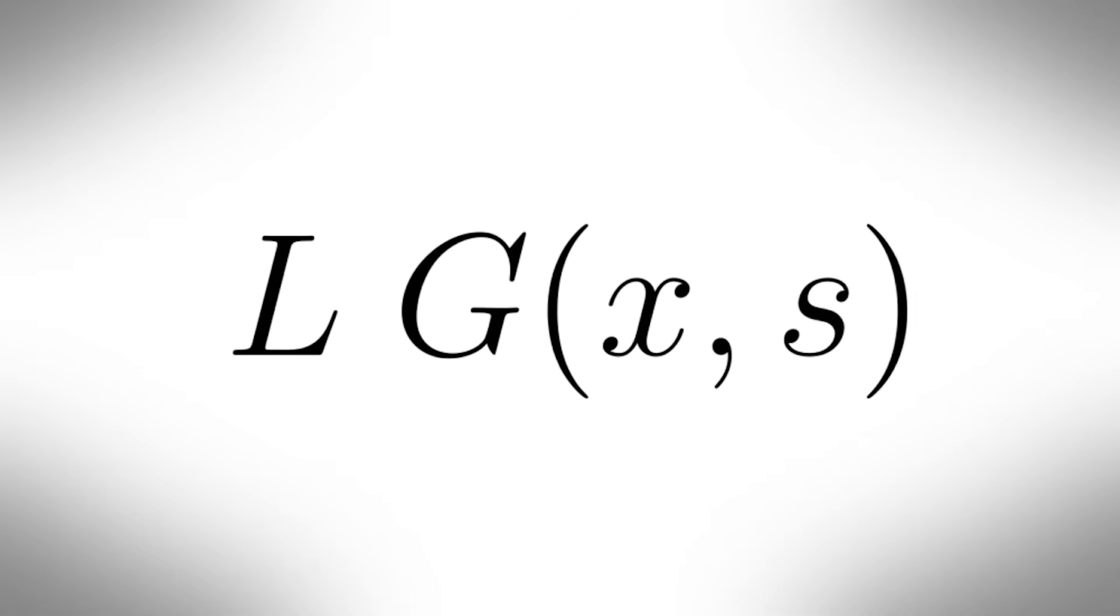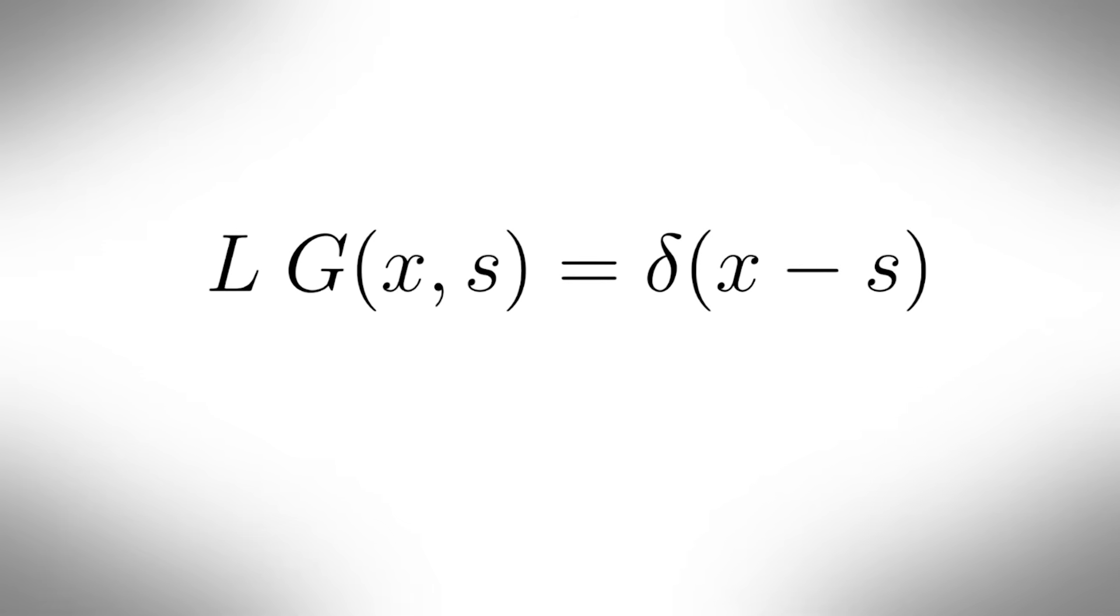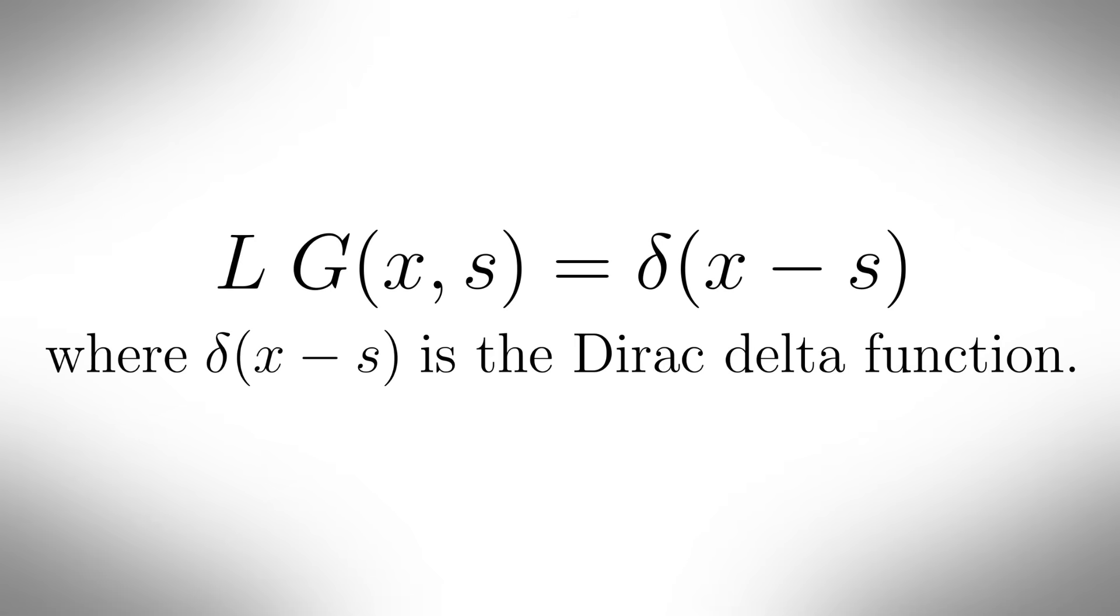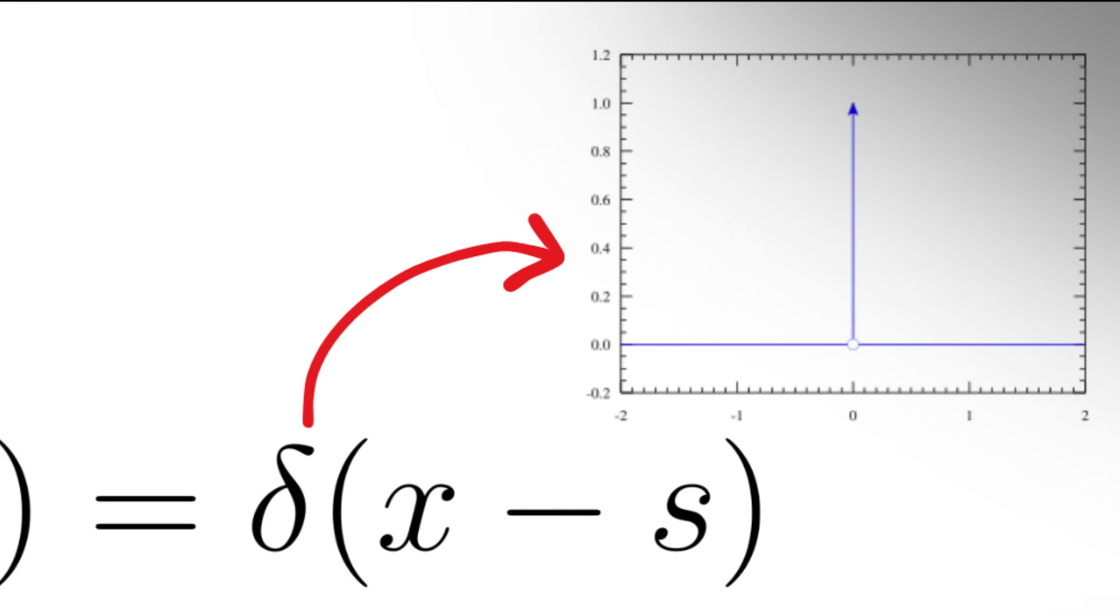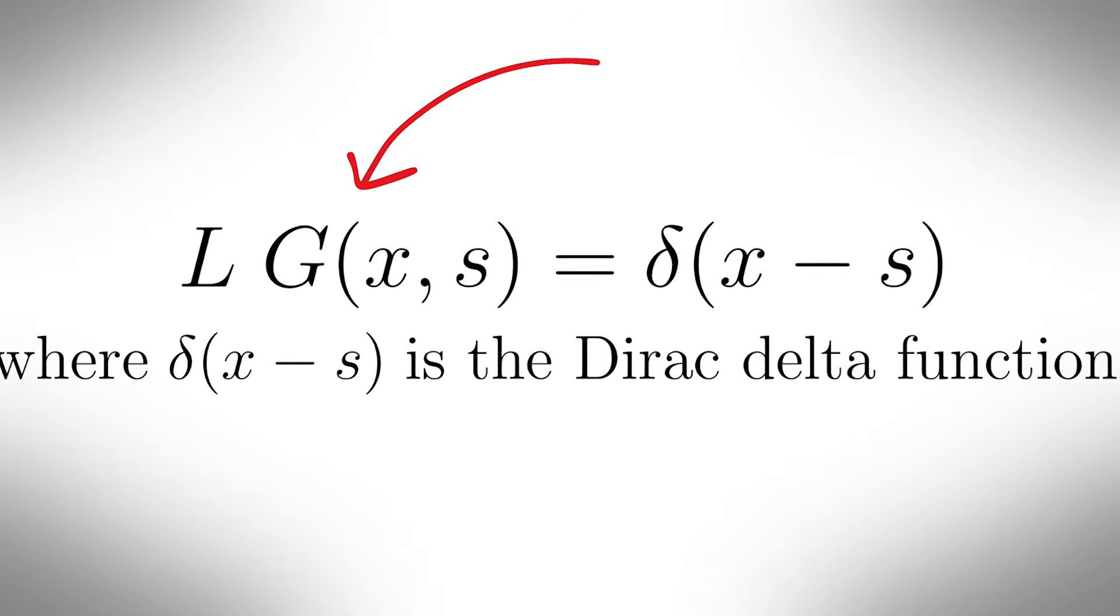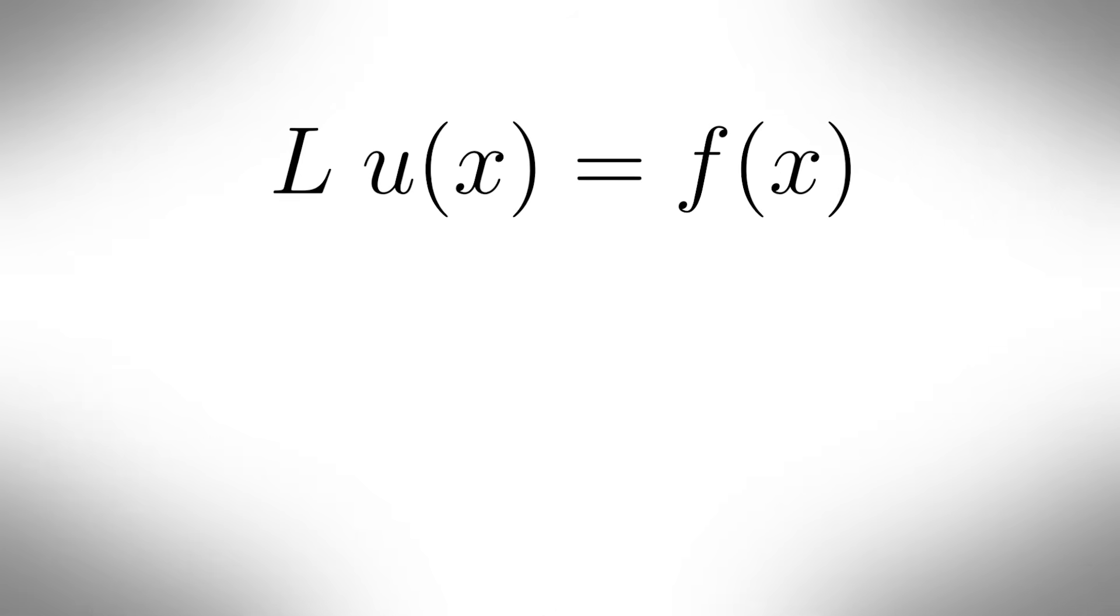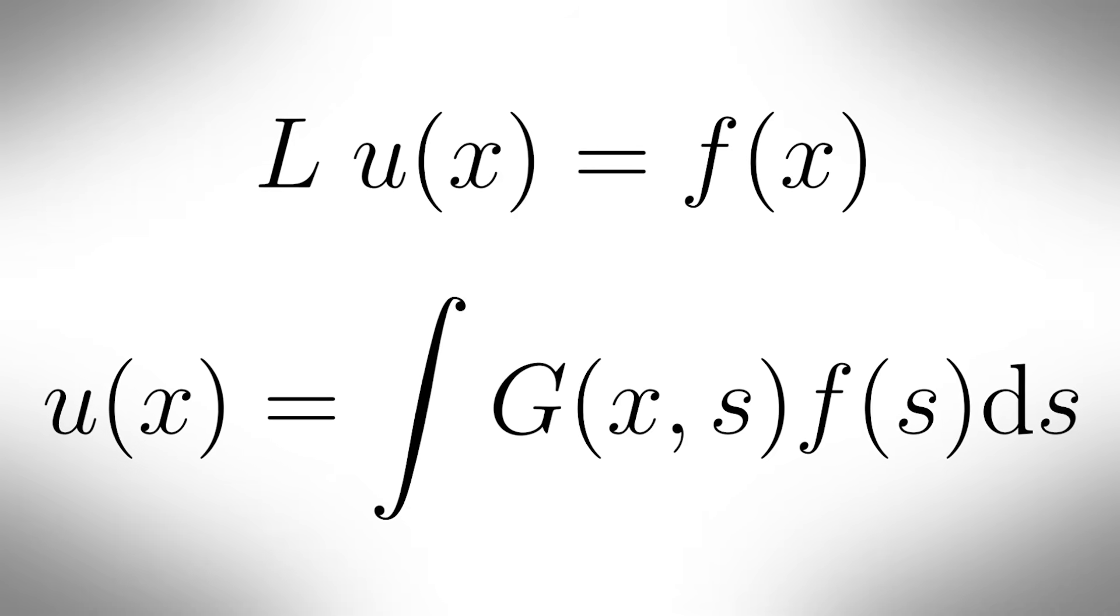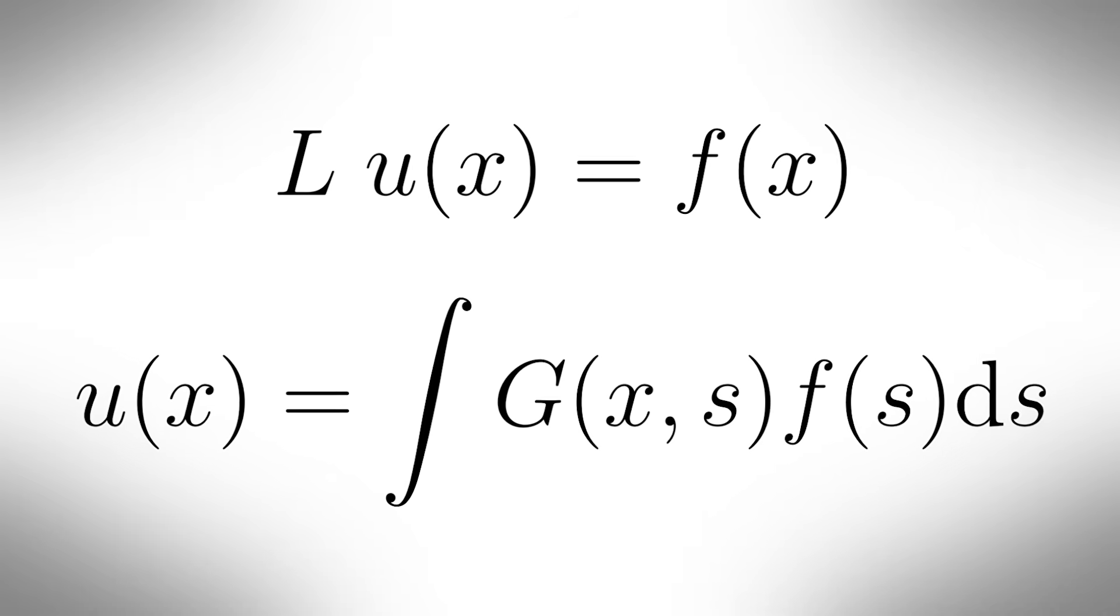Green's function. Suppose you have a linear differential operator called L and you want to solve an equation of the form L of u of x equals f of x. The Green's function written as g of x and s is defined as the solution to L of g of x and s equals delta x minus s, where delta x minus s is the Dirac delta function, which represents a unit impulse at the point s. So g of x and s tells us how the system responds at a point x when you put a unit impulse at a point s. Once you know the Green's function, the solution to your original equation can be written as an integral u of x equals the integral of g of x and s f of s ds.